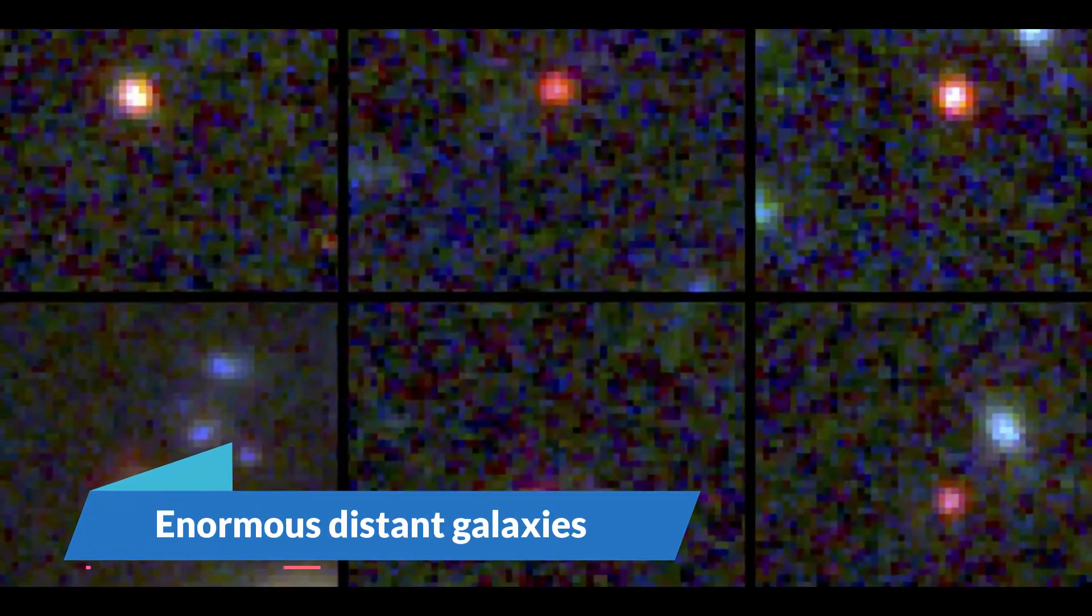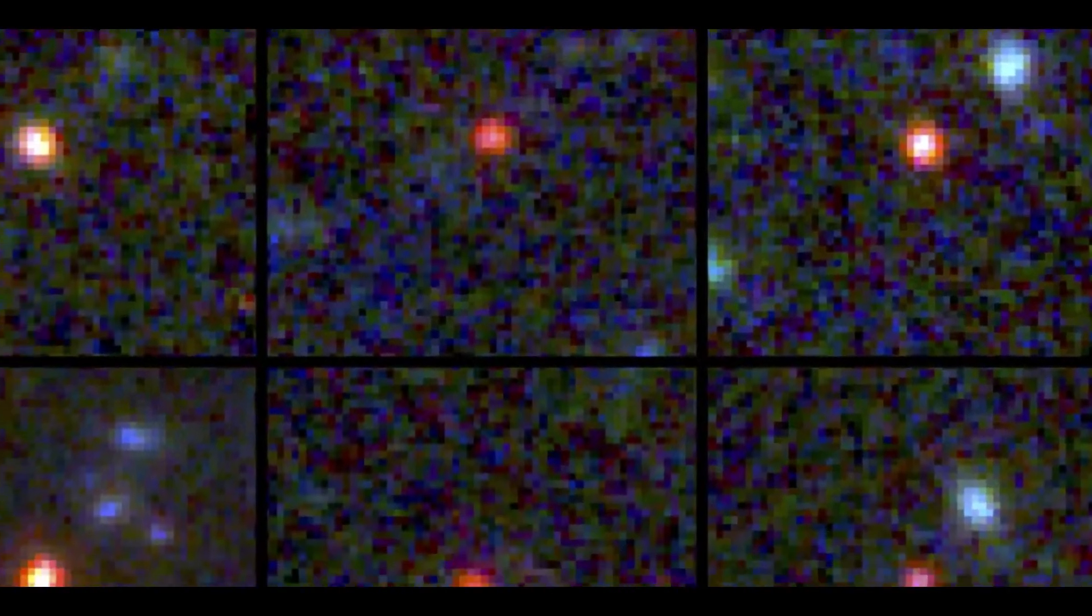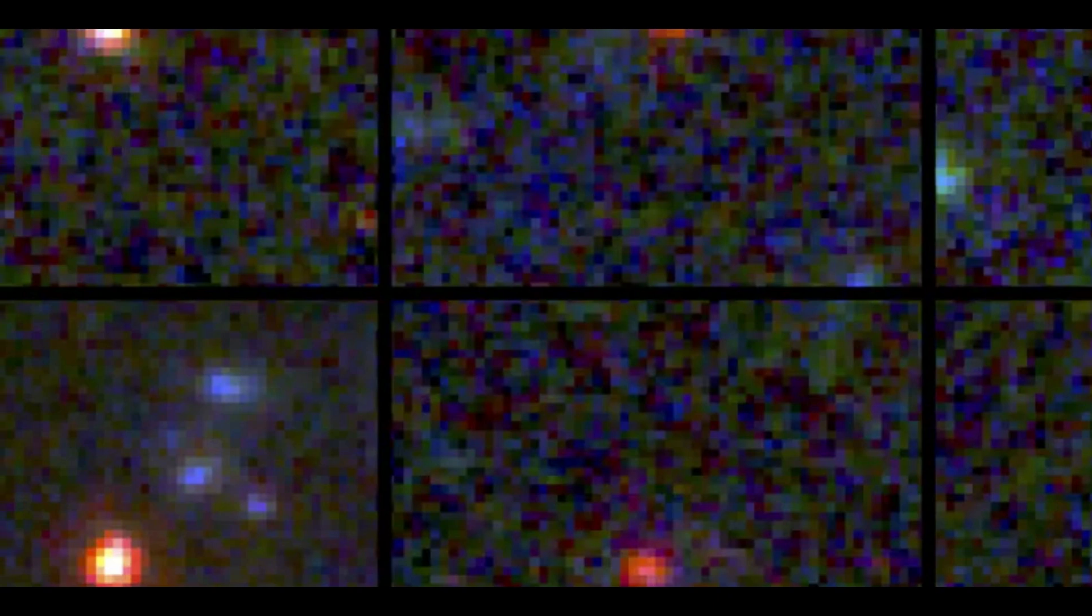Number three, enormous distant galaxies that should not exist. Nobody was expecting them. They had no business being there. Nobody can explain how they came to be. Deep field photos collected by the James Webb Space Telescope during its early observation campaign appear to be scattered with galaxies nearly as huge as the Milky Way and full of adult red stars, giving astronomers a headache.